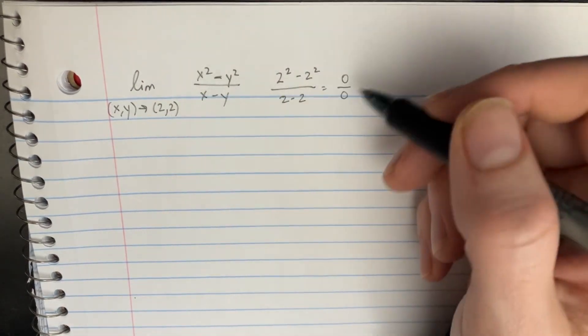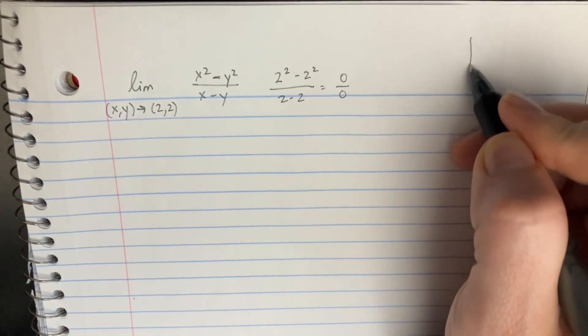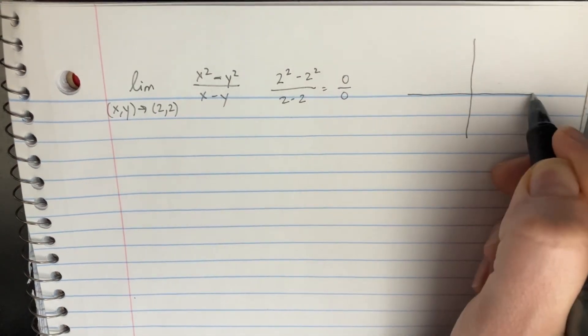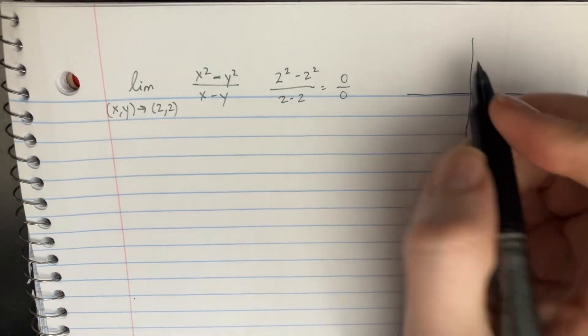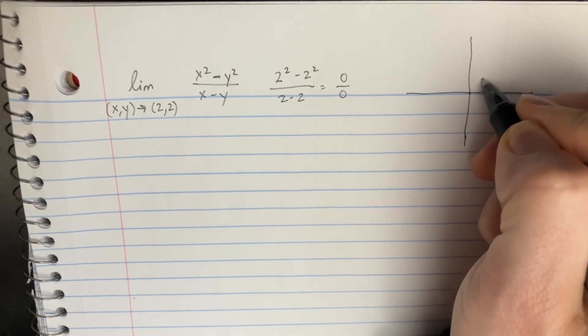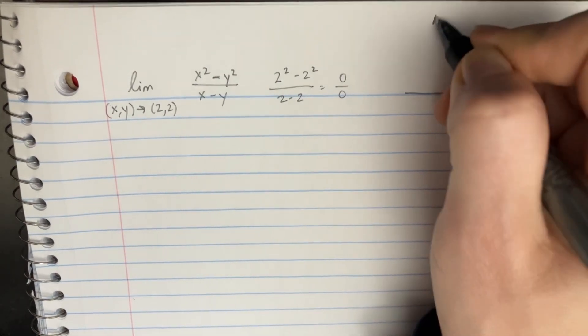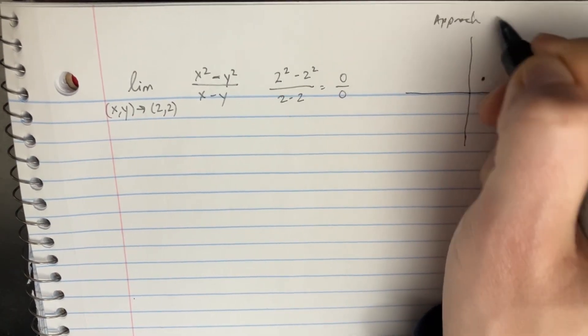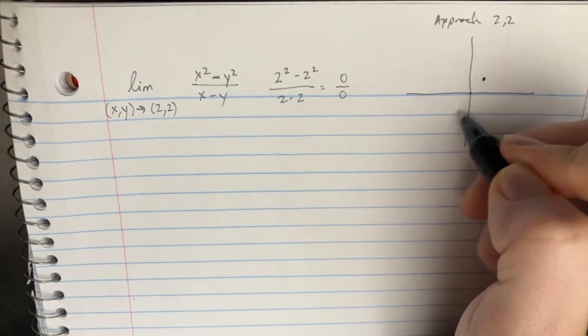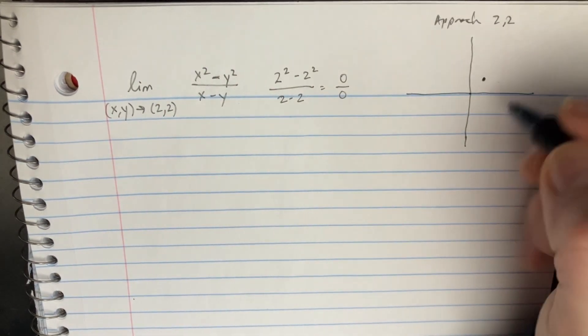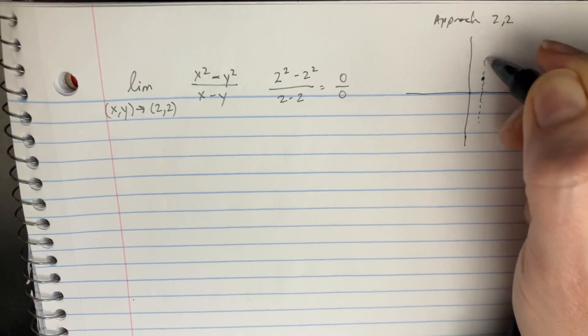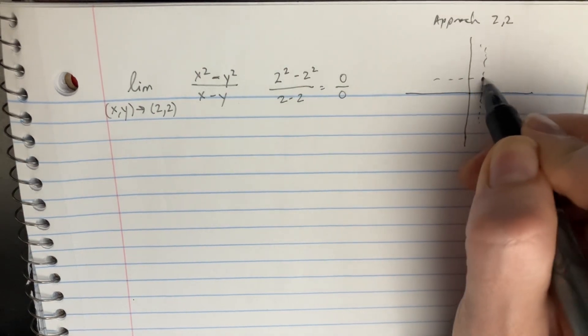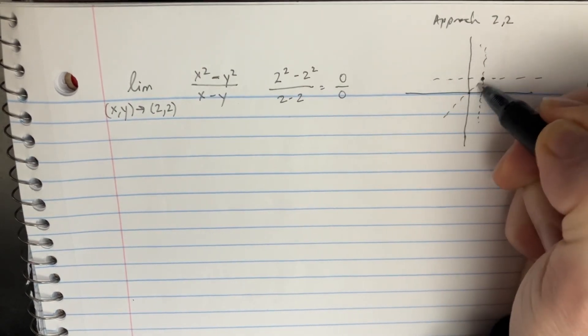We can't really take the L'Hopital method here to figure that out, so let's draw a little graph. Now we want to remember in these multivariable limits, we're approaching this point (2,2). So we want to draw some lines that we can approach this point with. We've got one line that goes there, one line that goes there, and one line that goes there.